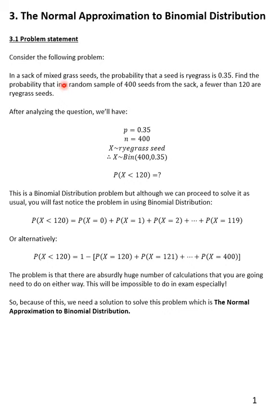For today's lesson we will be doing the last part of normal distribution, which is the normal approximation to binomial distribution. Consider the following problem: we have a set of mixed grass seeds, the probability of rye grass is 0.35, with a random sample of 400. Since we have a probability of success and a number of samples, this is a binomial distribution problem.